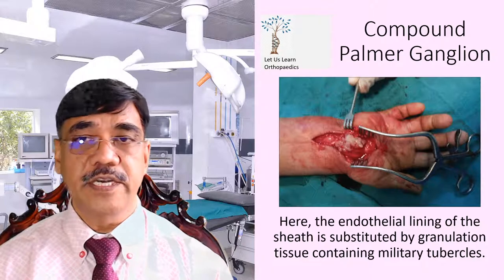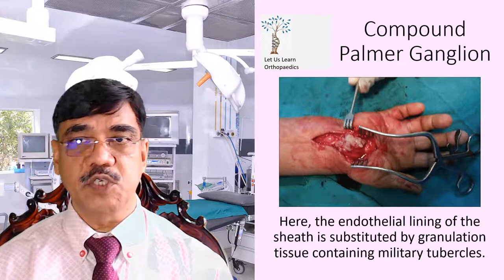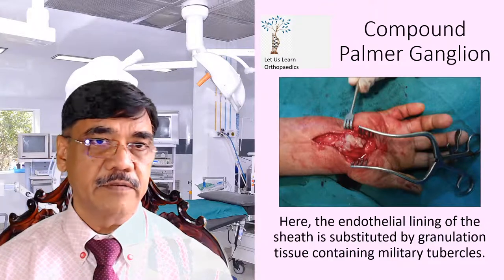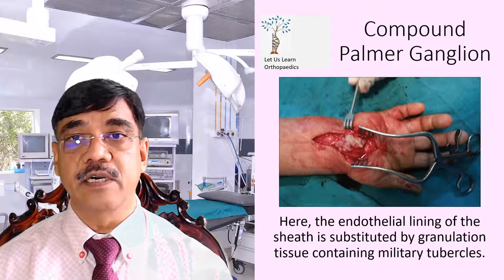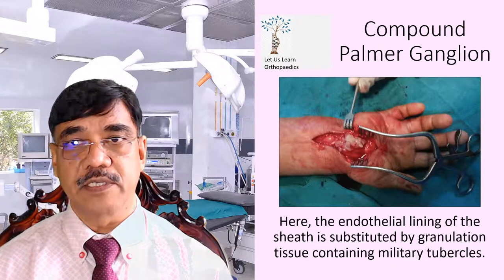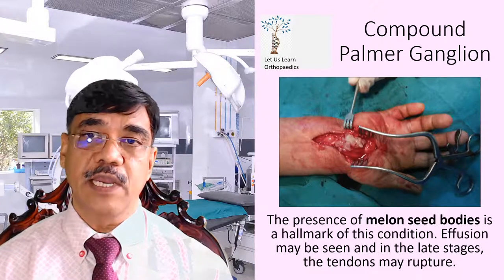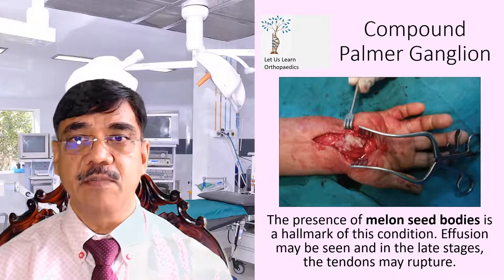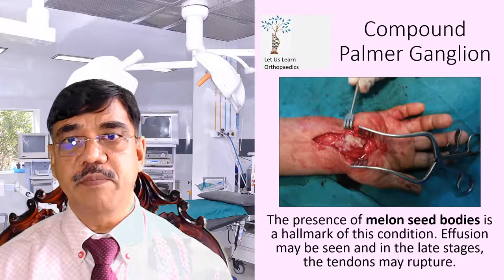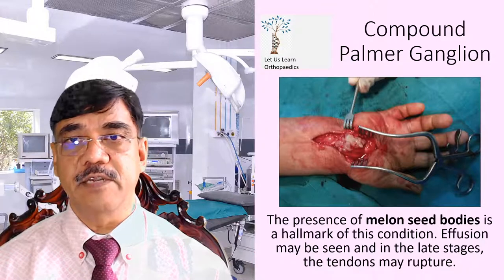The endothelial lining of the sheath is substituted by granulation tissue containing miliary tubercles. The presence of melon seed bodies is the hallmark of this condition. Effusion may be seen, and in the late stages the tendon may rupture.